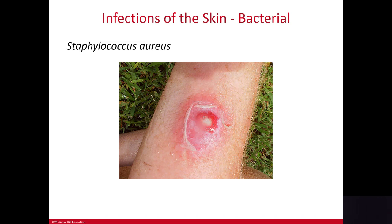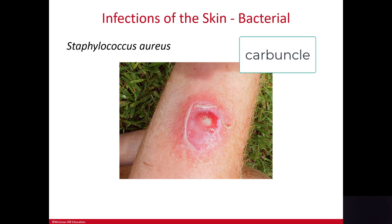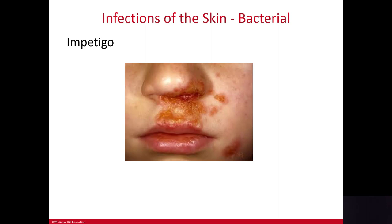Staphylococcus aureus — note that the name of a bacterium is always written in italics. We generally shorten it to staph. Staph is the most common bacterium to invade the body. It causes wound infections, pimples, boils, furuncles (infected hair follicles), and carbuncles (clusters of infected hair follicles). It also causes impetigo, a superficial skin infection characterized by honey-colored crusts — that honey-colored crust is the key distinguishing feature.